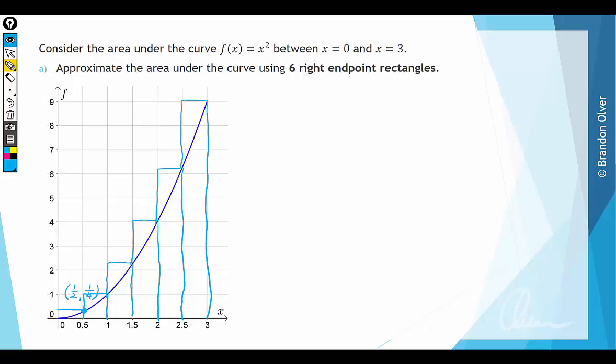For this method, the right endpoint rectangles are going to overestimate the area, because all of the area shown in yellow above the curve isn't actually under the curve. So we've got a lot more area than the exact answer, and everything in yellow is going to cause an overestimation.